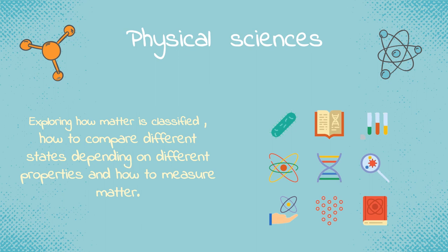Moving on to physical sciences, it is about exploring how matter is classified, how to compare different properties, and how to measure matter. We will start with describing and classifying matter. What does matter mean? How do we measure matter mathematically? And what changes does matter go through? The change can either be physical or chemical change.